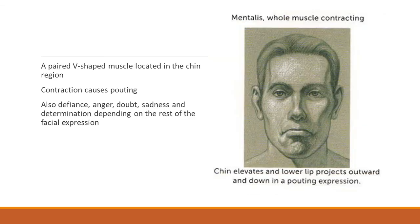The mentalis — a pair of V-shaped muscles in the chin region — when contracting, causes pouting. Emotions associated with this include defiance, anger, doubt, sadness, and determination, depending on the rest of the facial expression. Eye movement included with this really contributes to whatever expression you're trying to achieve. The chin elevates, the lower lip projects outward and down in a pouting expression, creating wrinkles in the chin, forming almost a wrinkled ball shape at the chin when that muscle is fully contracting.